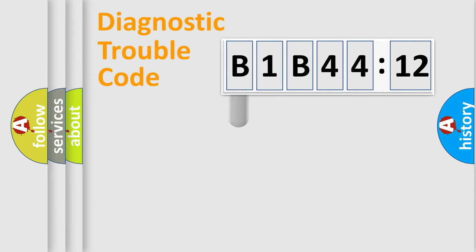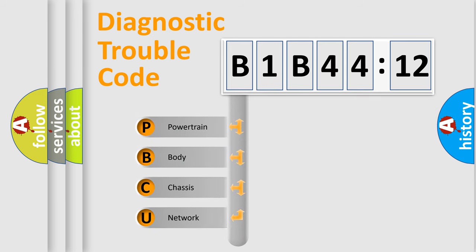First, let's look at the history of diagnostic fault code composition according to the OBD2 protocol, which is unified for all automakers since 2000. We divide the electric system of automobile into four basic units.